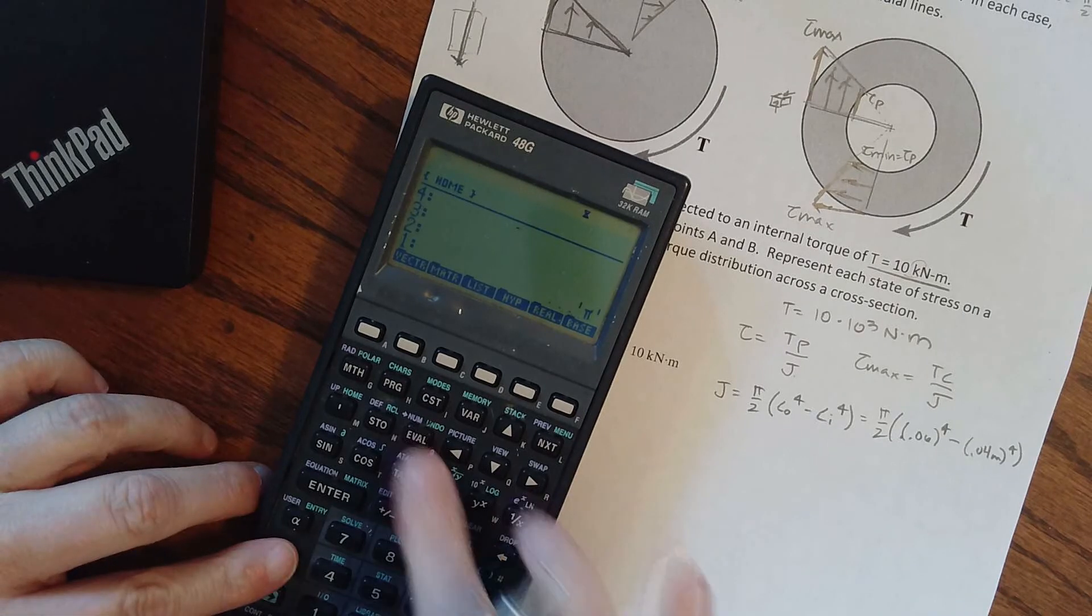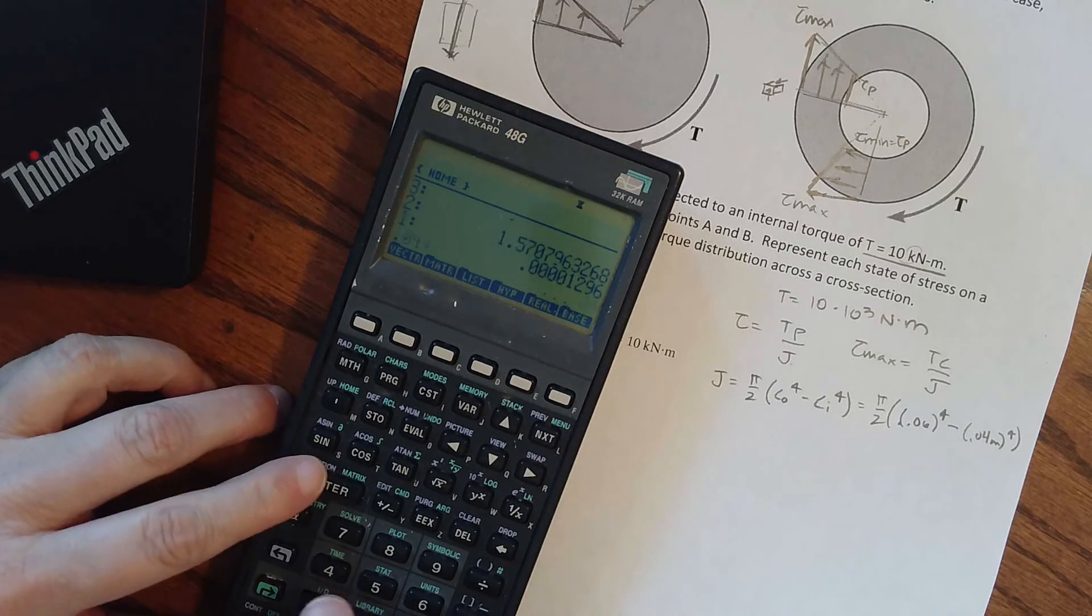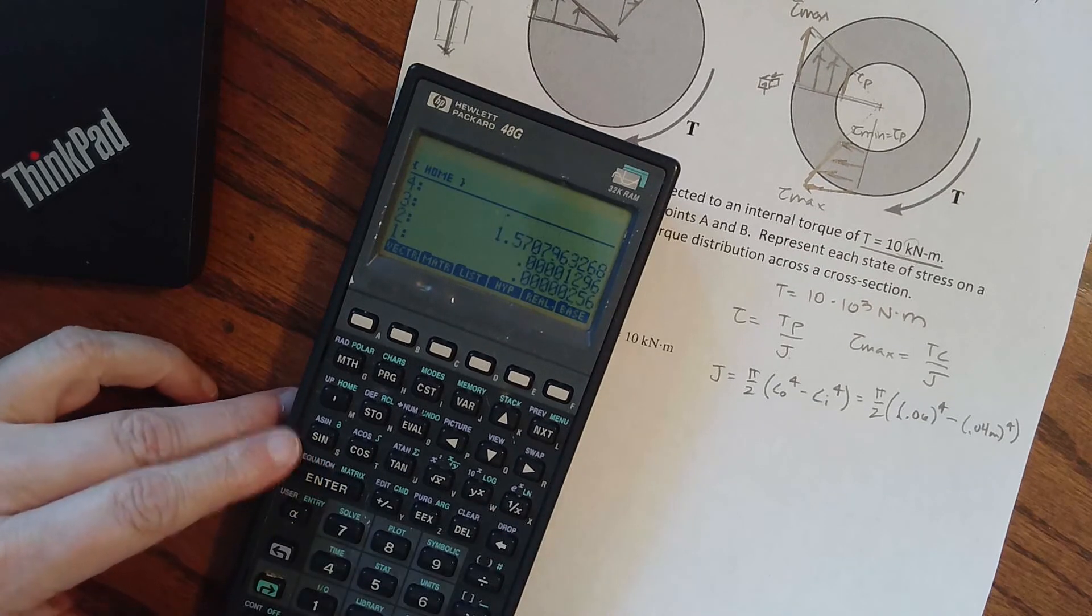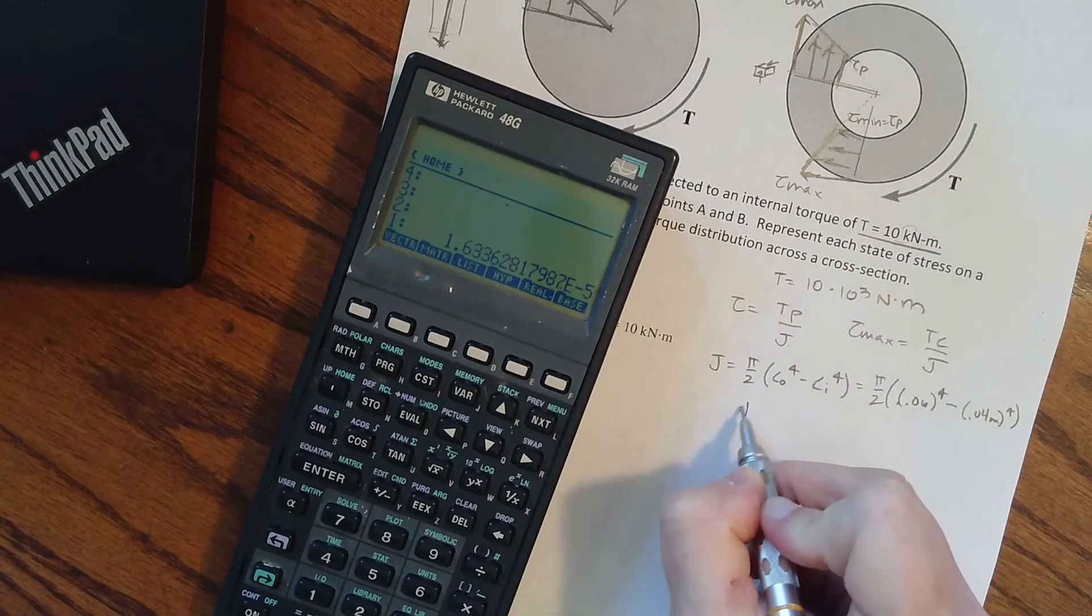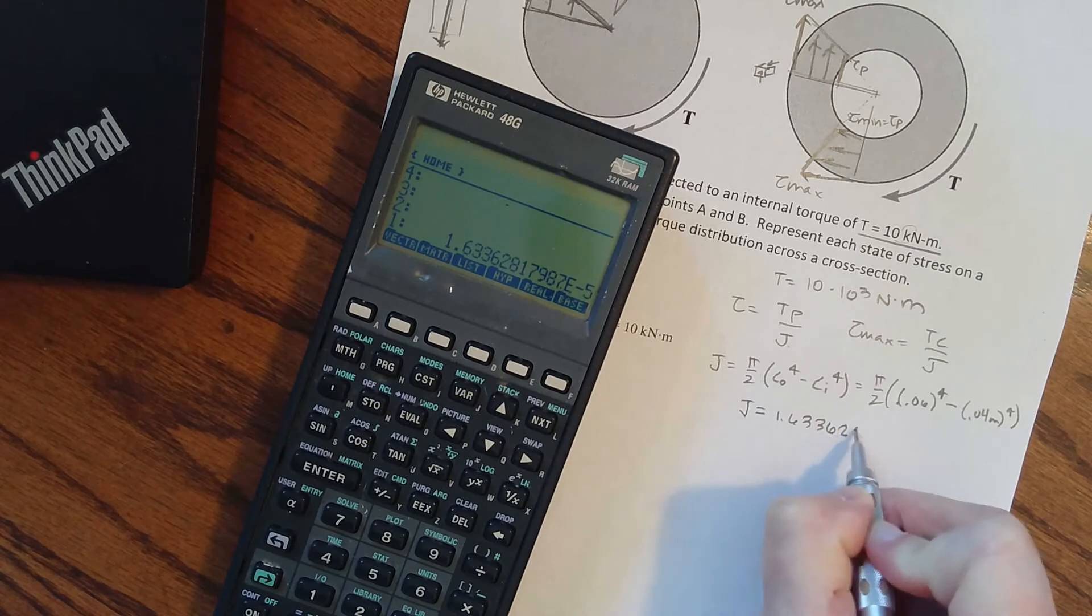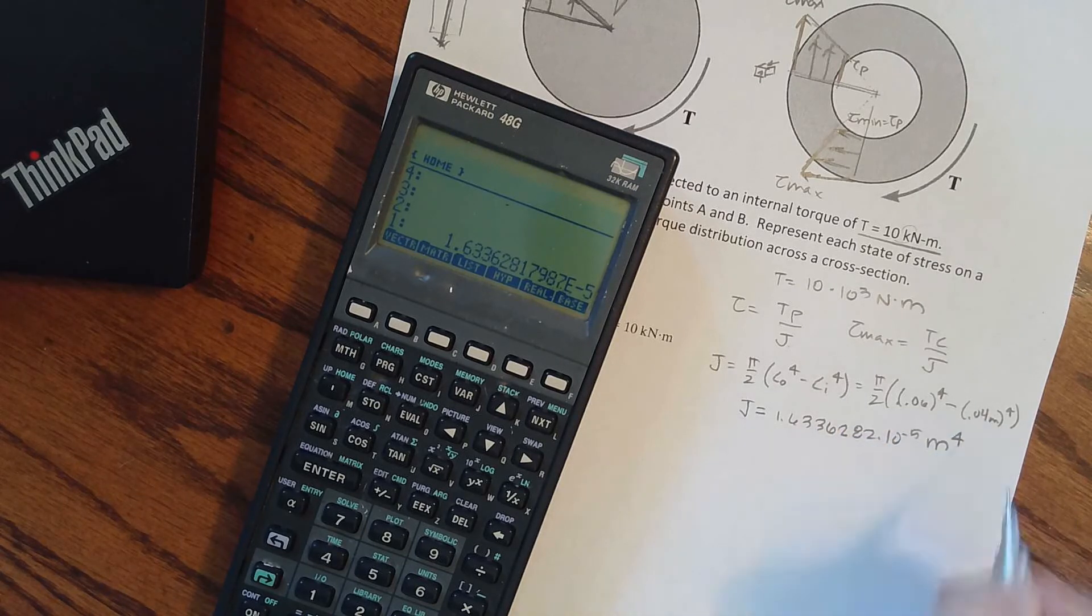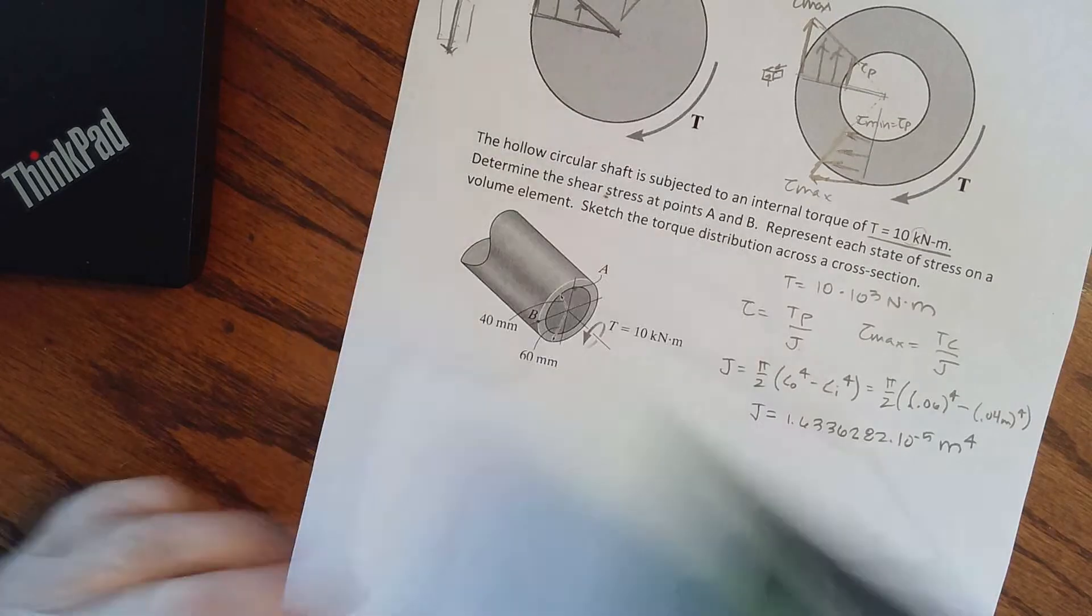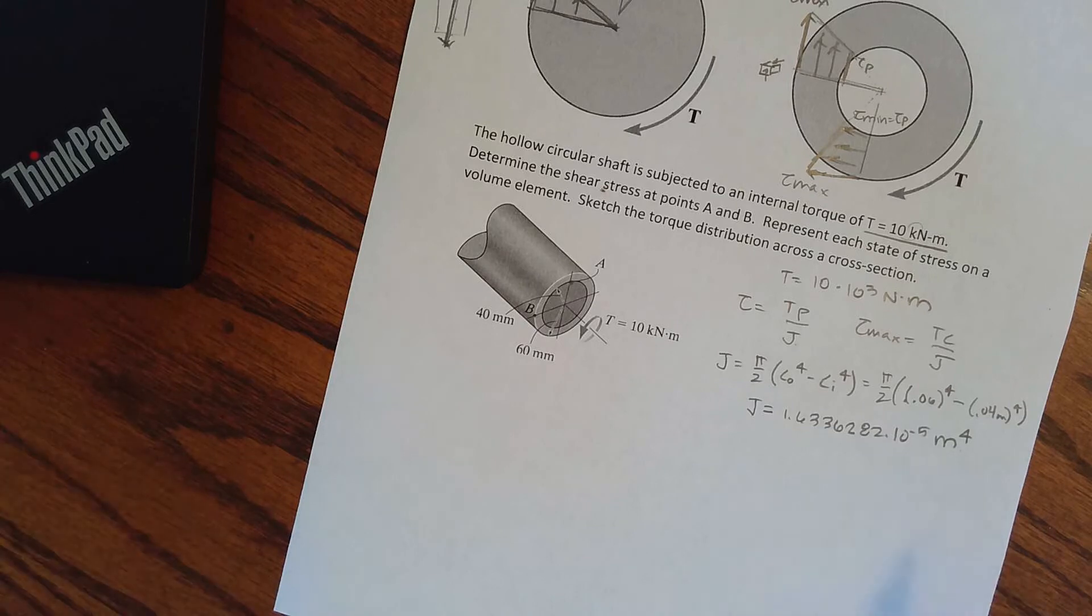Let's get that calculated. Pi is a number, two divided by 0.06 to the fourth, 0.04 to the fourth minus times, and I get that J equals 1.6336282 times 10 to the negative fifth, and that's going to be meters to the fourth. It has the same units as that moment of inertia, it's the units of length to the fourth.